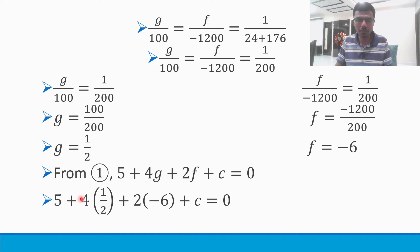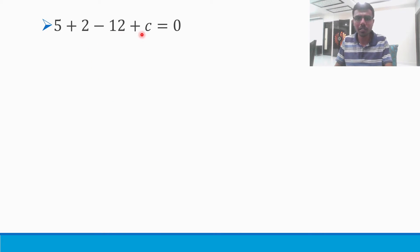2 × 1/2 is 1, so 5 + 2, and 2 × (-6) is -12. So 5 + 2 - 12 + c = 0. 5 + 2 is 7. 7 - 12 is -5. -5 + c = 0. Send this -5, so I get c as 5. So I got g, I got f, and I got my c.